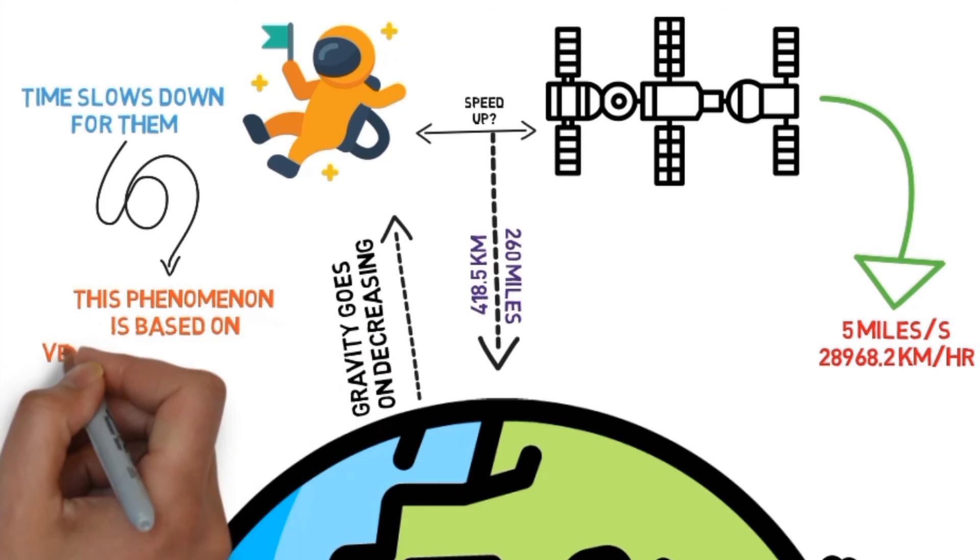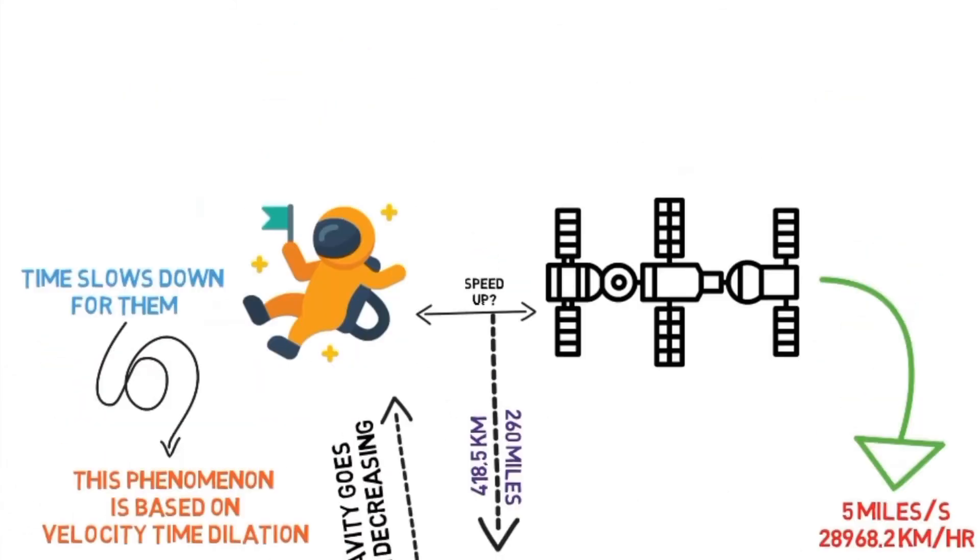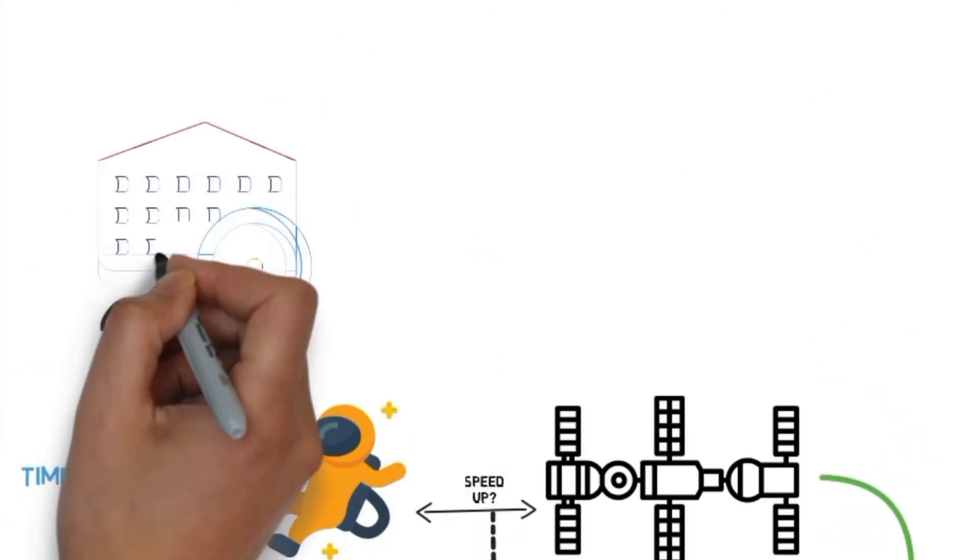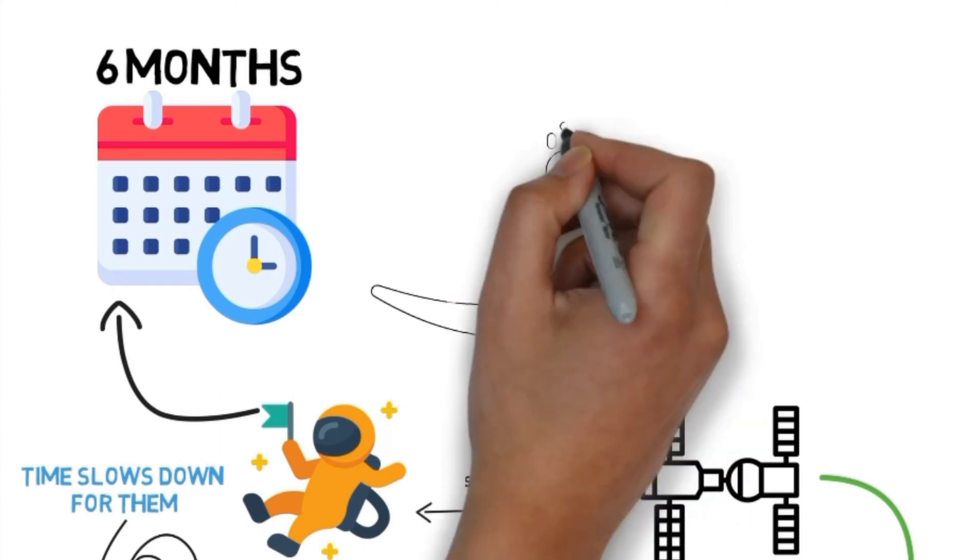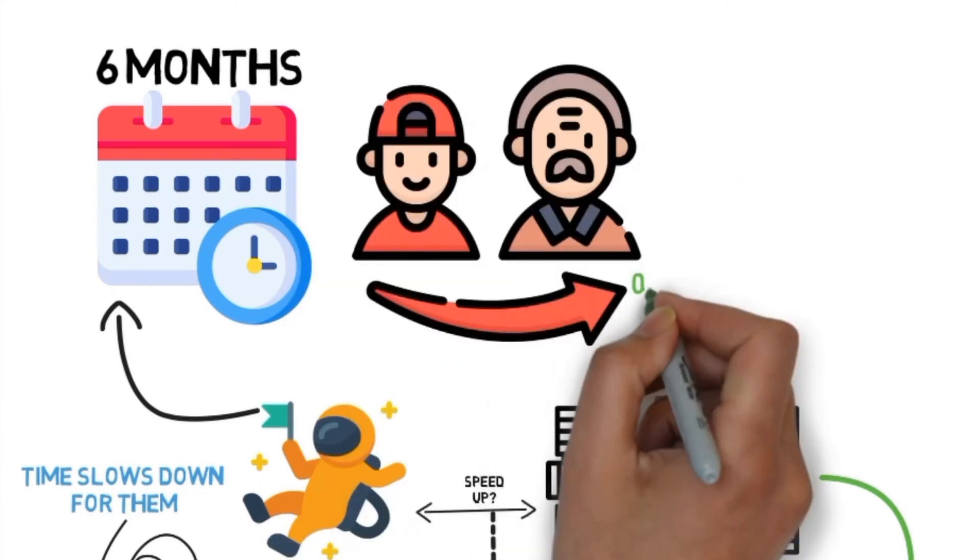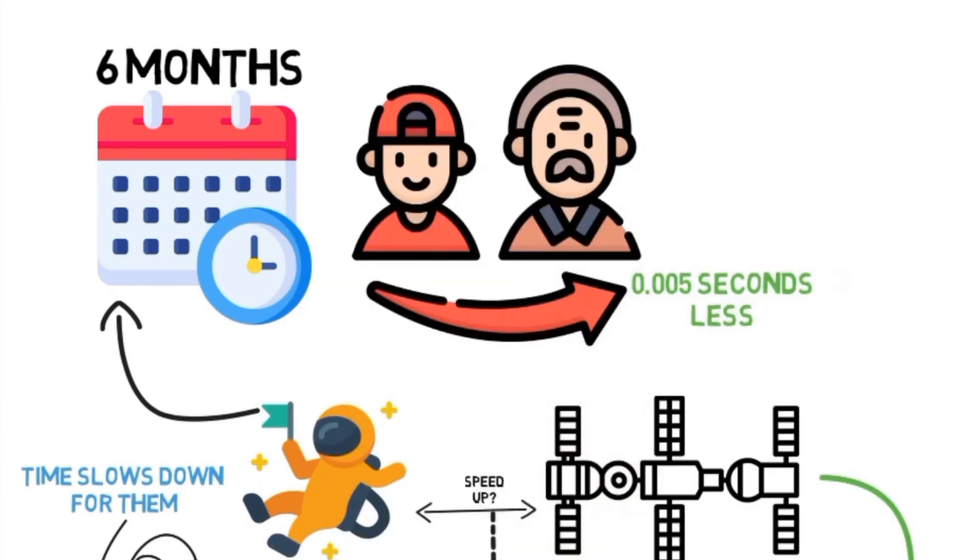We will explore velocity time dilation in another episode. The difference isn't noticeable though. After spending 6 months on the ISS, astronauts have aged about 0.005 seconds less than the rest of us.